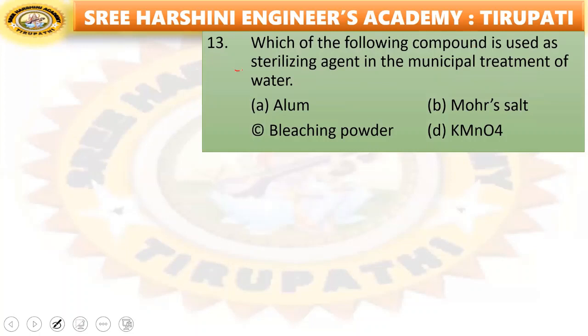Next: which of the following compound is used as a sterilizing agent in municipal treatment of water — alum, Mohr's salt, bleaching powder, or KMnO4? Bleaching powder is the sterilizing agent used in municipal treatment of water.